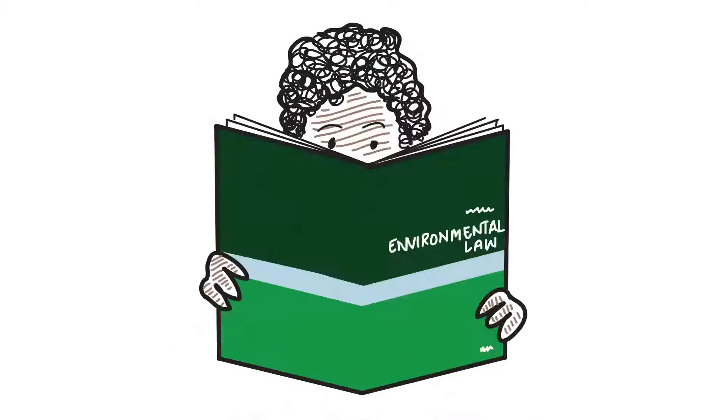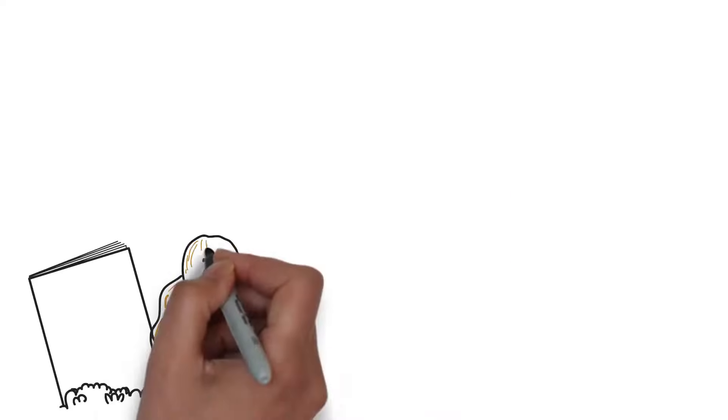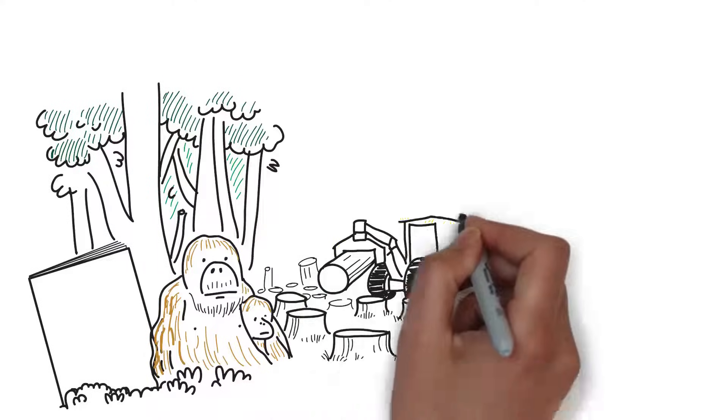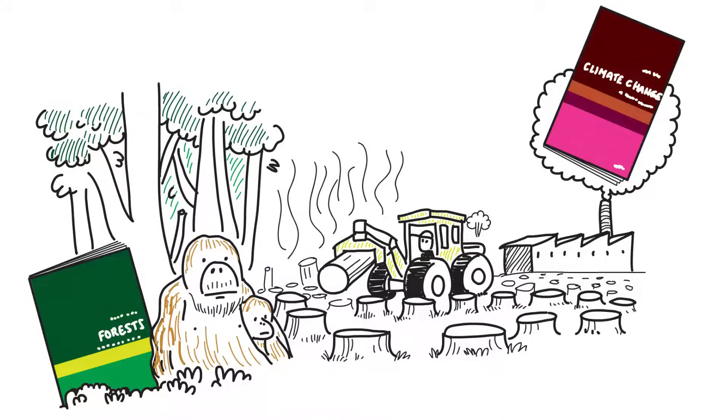Environmental law is the law of environmental problems. There are lots of different types of environmental problems, from deforestation and species extinction to pollution and climate change.